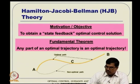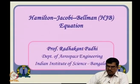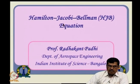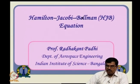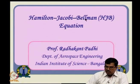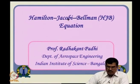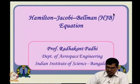Let us see how we use this to derive the HJB equation. This is famously called the Hamilton-Jacobi equation, but later Bellman's name was also added because of his own contribution. So now it is famously called the HJB equation — the Hamilton-Jacobi-Bellman equation.